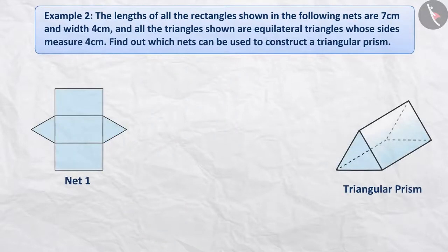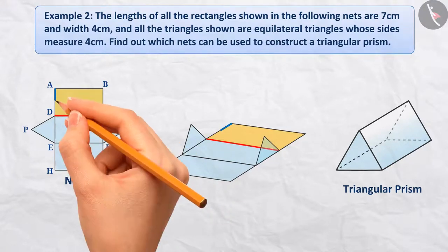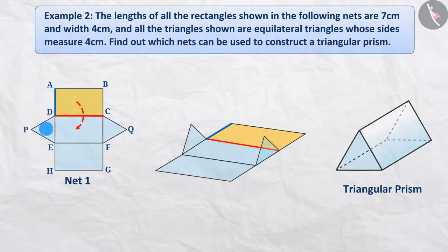For convenience, we will name various nets. We will fold the triangle PED along the line segment DE in such a way that it is perpendicular to the rectangle DEFC. Similarly, we will be folding triangle QCF along the line segment CF in such a way that it is perpendicular to the rectangle DEFC. Now, we will fold the rectangle ABCD along the side CD such that its side AD is attached to arm PD of triangle PED and the side BC is to be attached to arm QC of triangle QCF.